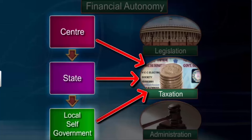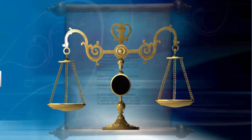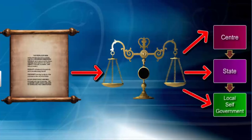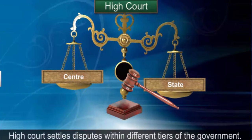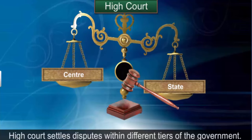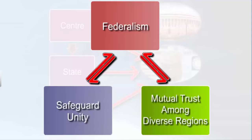An independent judiciary is the very essence of federalism. The courts have the power to interpret the constitution and the powers of the different tiers of government. The highest court of the land acts as an arbitrator in case of a dispute between different tiers. Federalism has the dual objectives of promoting unity of the country and recognizing regional diversity by way of mutual trust and agreement of living together.